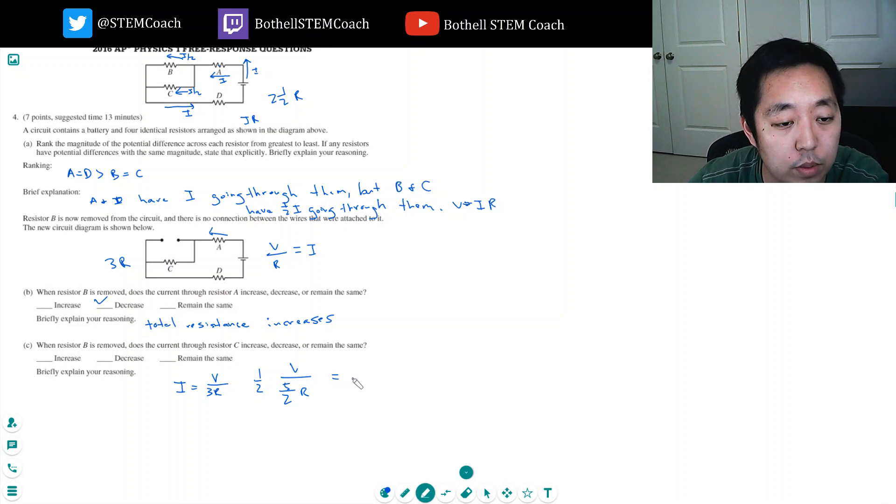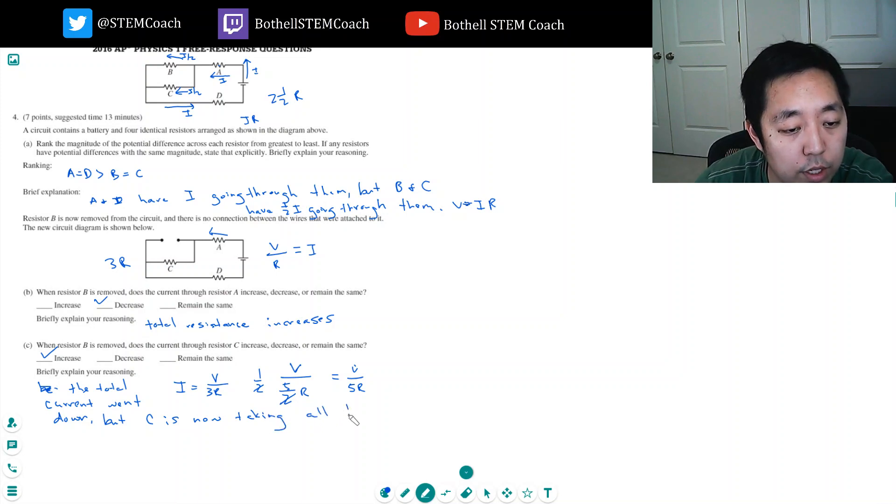So it would have been like that, which would have been that these two cancels that V over five R. So you see, this is the before and this is the after and it would have increased. It would increase because the total current went down, but C is now taking all the current B took.